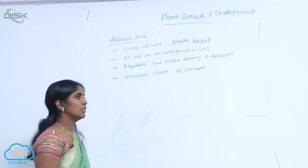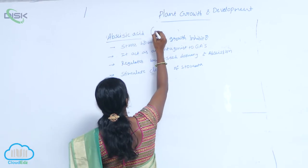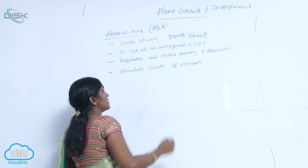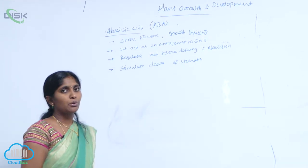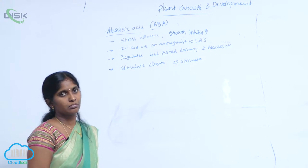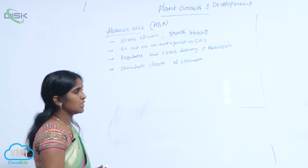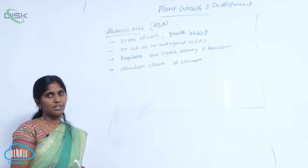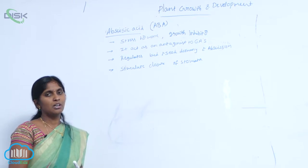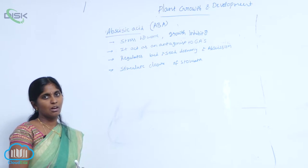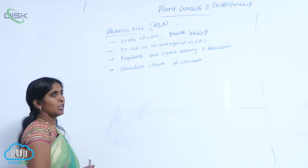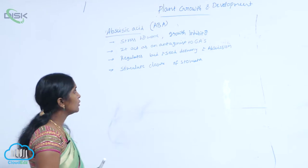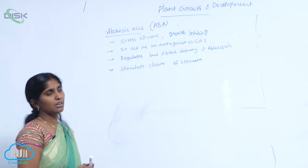Abscisic acid, that is ABA, is also called a plant growth inhibitor. It is released by the plant when it is in a stress condition, hence the hormone is called a stress hormone. It is also a growth inhibitor hormone.